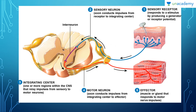Now let's understand the whole process diagrammatically. First, we have the sensory receptor, which responds to a stimulus by producing a generator or receptor potential. Imagine a nail has hit your skin — this produces a generator potential, and the signal is carried by the sensory neuron, whose axon conducts the impulse from the receptor to the integrating center — meaning we've now reached the spinal cord.